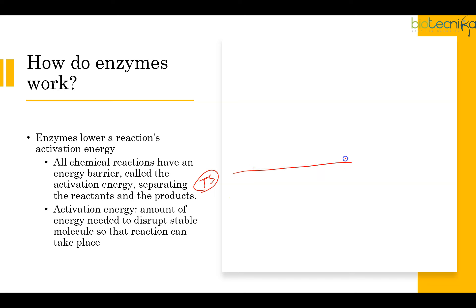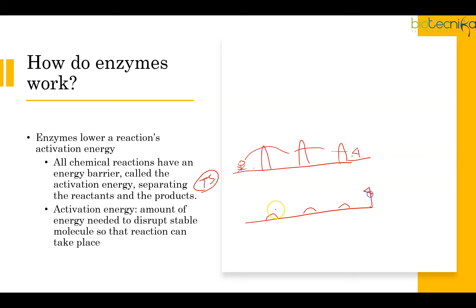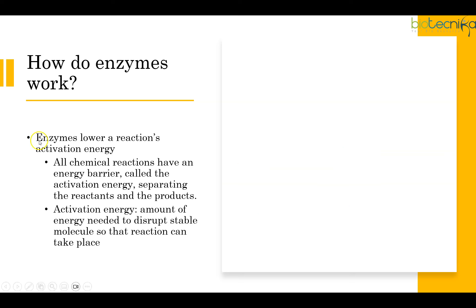Imagine a hurdle race where the hurdle heights are very high — in a given amount of time not many players will be able to reach the finish line, so the rate of the race will be slow. On the other hand, if you have hurdles which are very low, then in a given time many people will reach the finish line. This is exactly what happens in an enzymatic reaction — in a given amount of time many substrates are converted into product. Activation energy is the amount of energy needed to disrupt the stable molecule so that the reaction can take place.